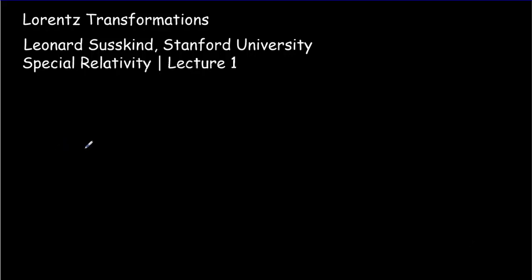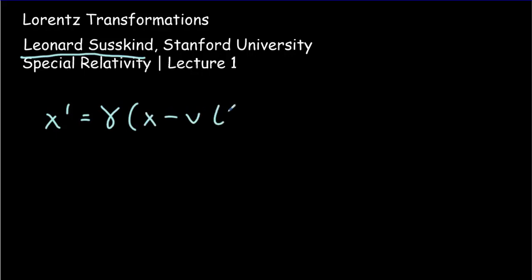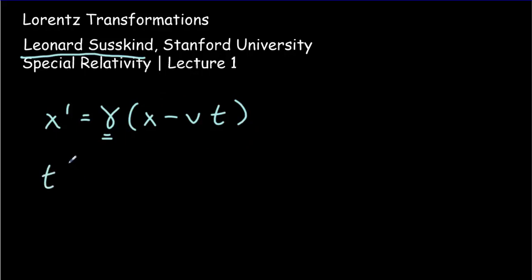I'm not going to derive those equations, but world-renowned physicist Leonard Susskind does a great job in a very simple and elegant manner in an online video called Special Relativity Lecture 1. The transformation equations, which you will get in your data booklet: the position in the moving frame is given by the Lorentz factor gamma times the position in the non-moving frame minus vt. The equation for time in the moving reference frame is given by gamma times the time in the non-moving frame minus the relative velocity times the position in the non-moving frame divided by the speed of light squared.